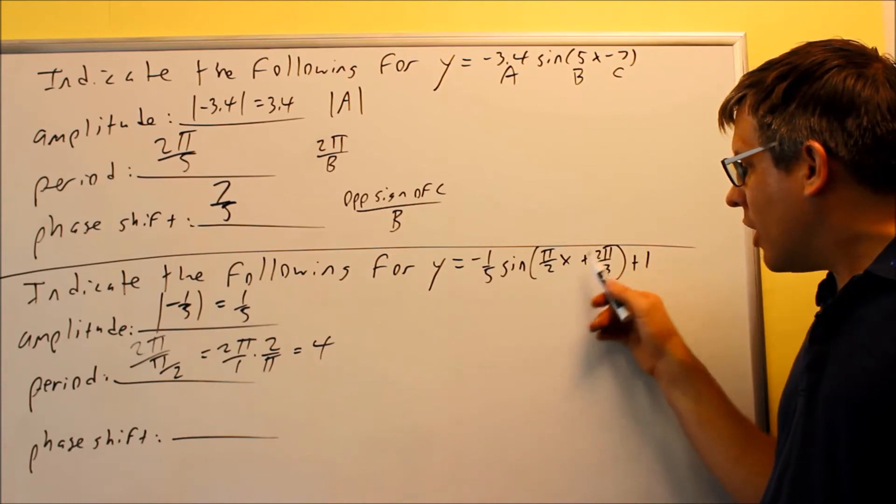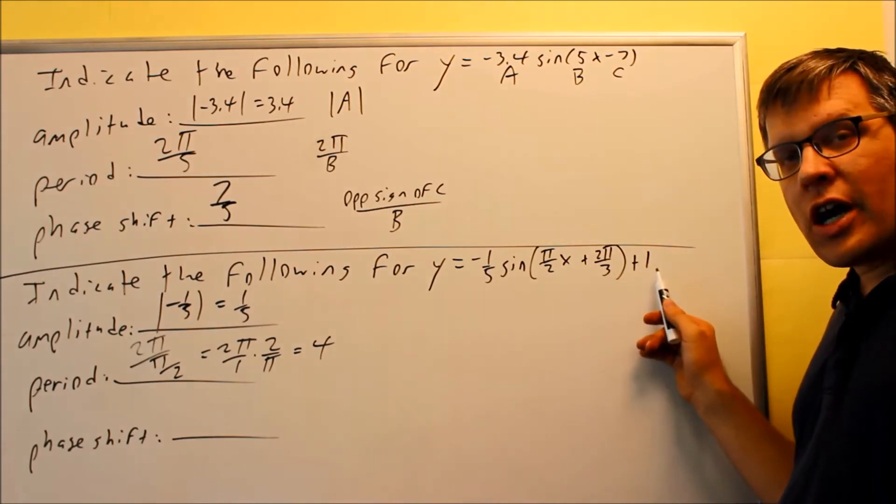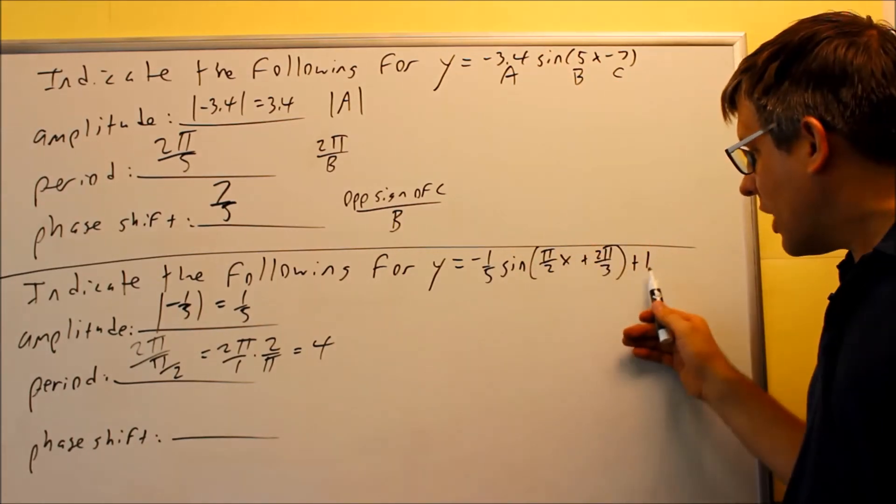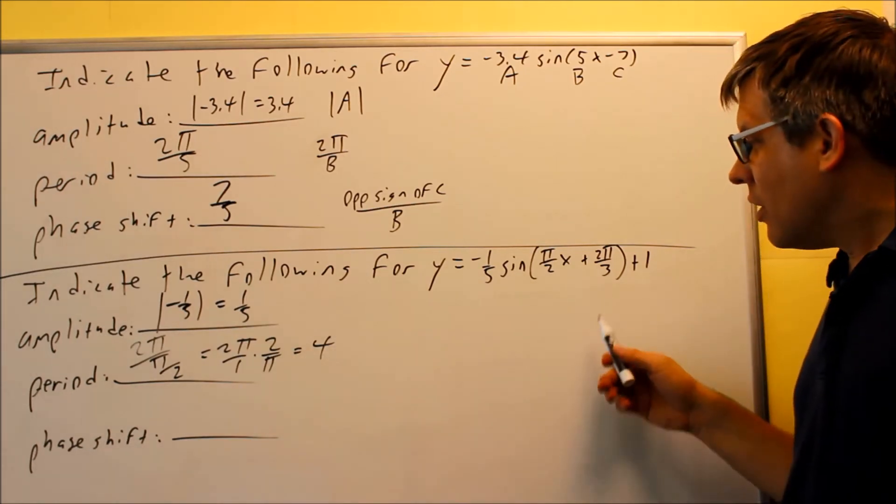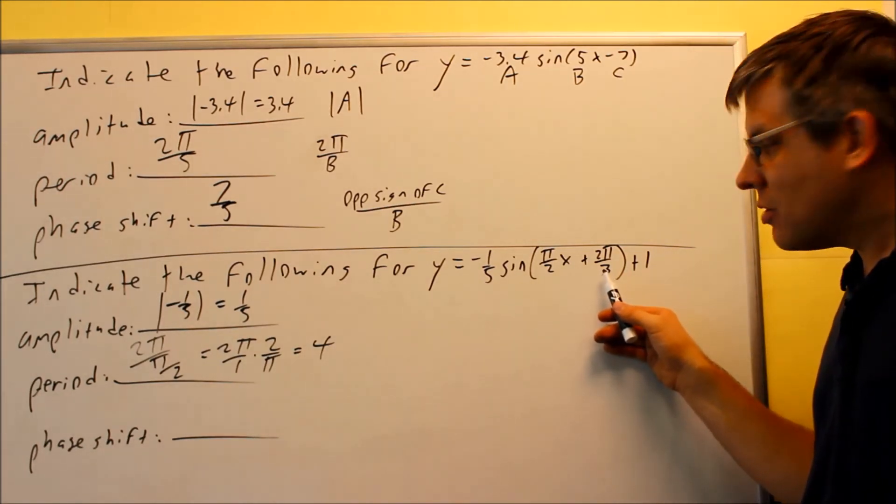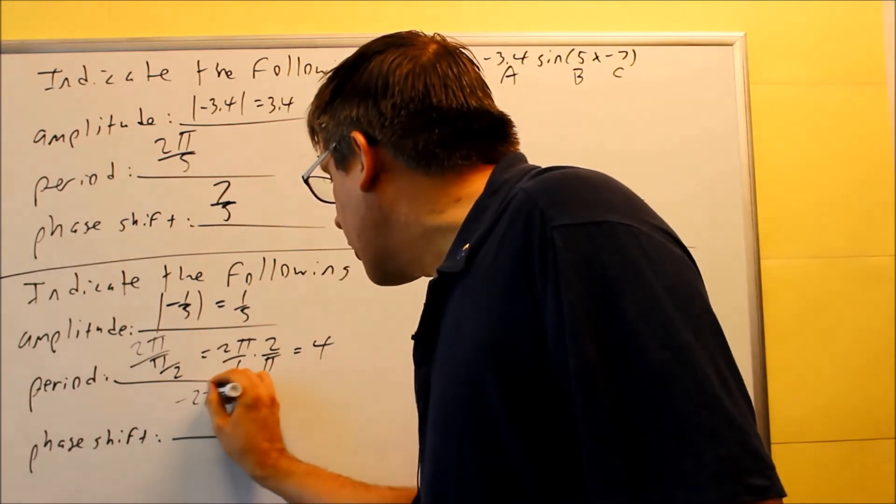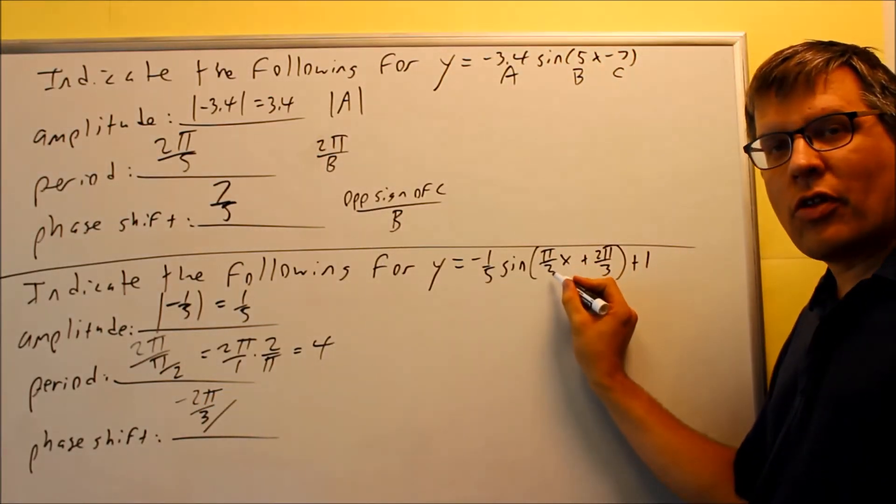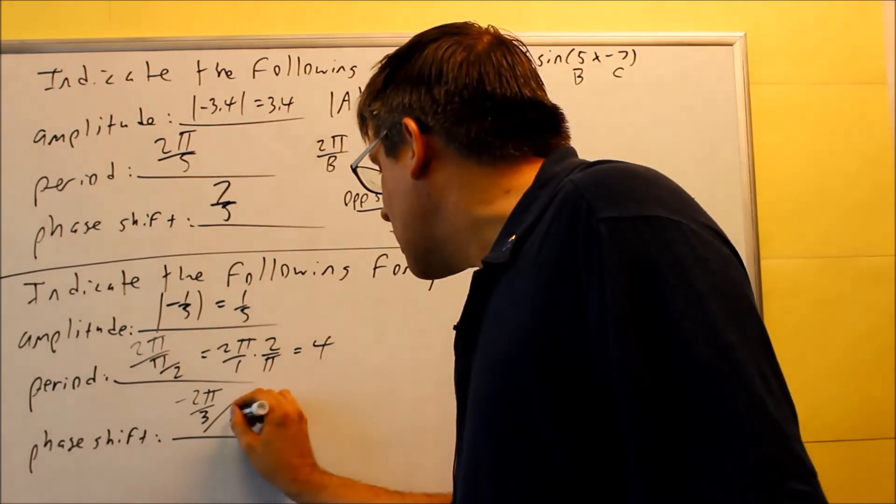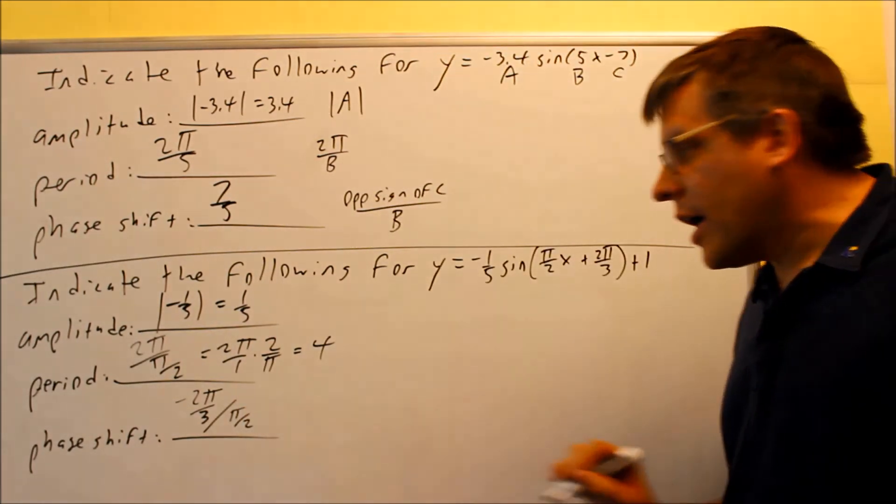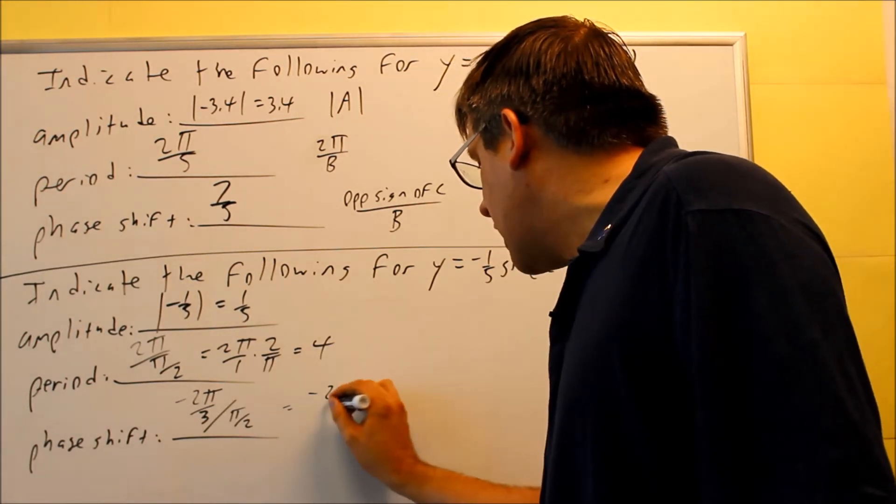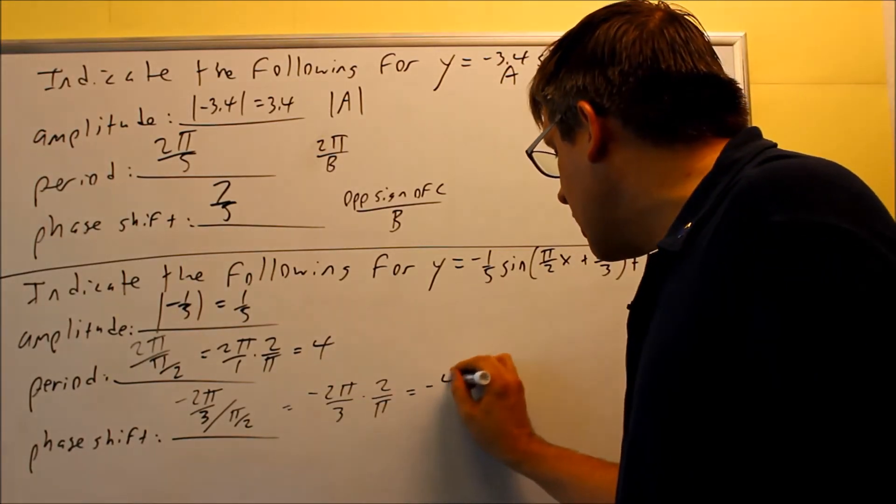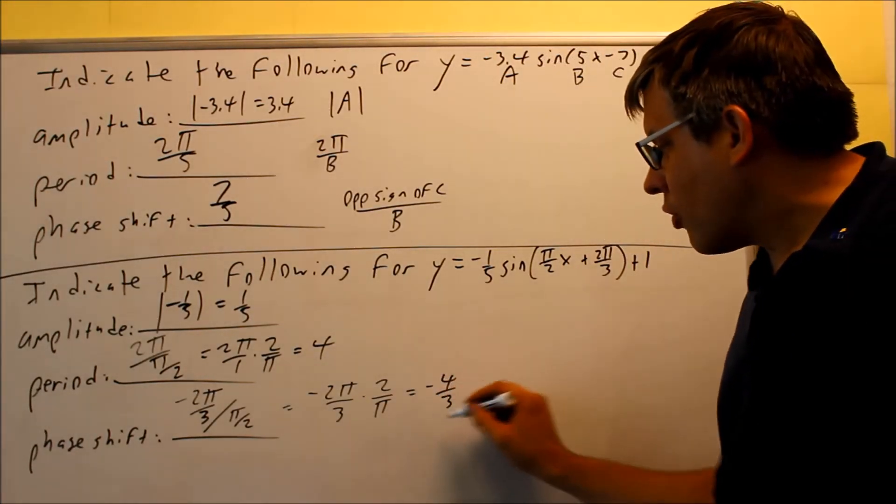Your phase shift is opposite sign of C over B. Now this number on the end, we're not going to use that. That would be like a D and I talked about that before. That would be moving the graph up and down. So that's not used at all when we do these three things here. You're going to use this number. Opposite sign of this is plus 2π over 3, we're going to do negative 2π over 3. We're going to divide this by the number in front of the x, which is π over 2. When we do that, we're going to do the flip again. We're going to do negative 2π over 3 times the reciprocal, 2 over π. The π's cancel and we get negative 4/3. So negative 4/3 would be your phase shift.